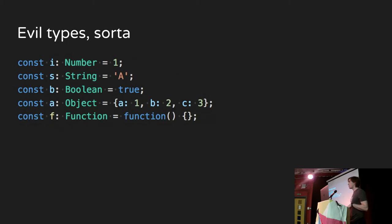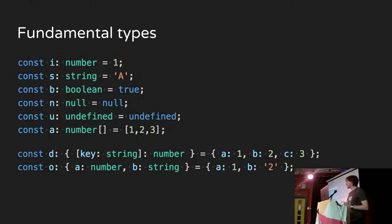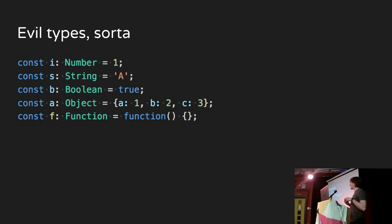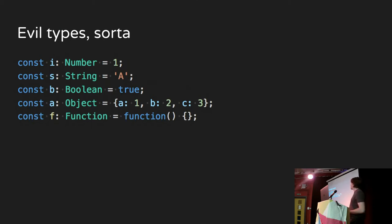A few evil types to be aware of: number, string, and boolean should be lowercase — that's the type. Uppercase versions are the old object constructors which you should never use in JavaScript because they're bad. Object basically means any object that inherits from the base object class, which is any object — it's not wrong, it's just completely useless. Function similarly means any function, but there are better types you can use to define those.